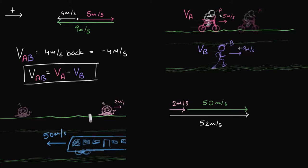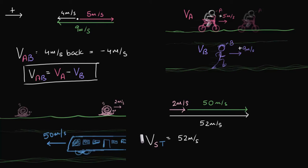Notice that both movements are happening in the same direction. So the snail effectively travels 52 meters per second forward. This is the velocity of the snail with respect to the train — an incredible 52 meters per second! The snail is super fast with respect to the train. This makes sense — if you're traveling in one direction and see vehicles approaching from the opposite direction, they zoom past very fast relative to you. Now bringing in signs: velocity of the snail is positive, and velocity of the train is negative because it travels left.